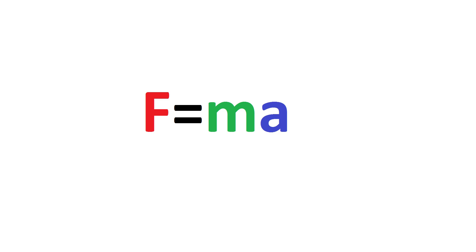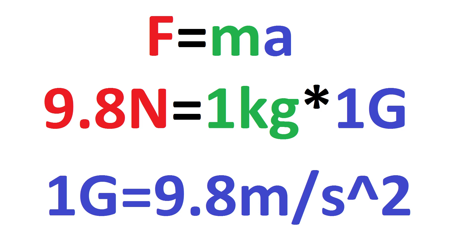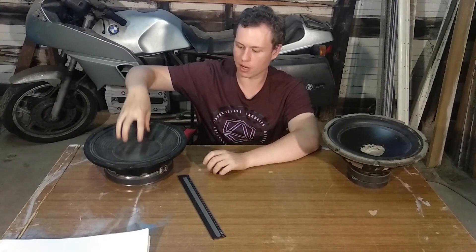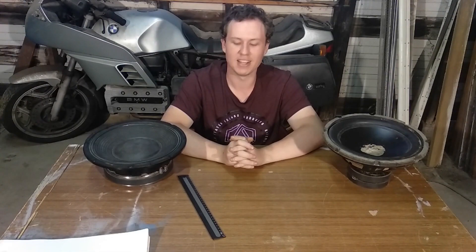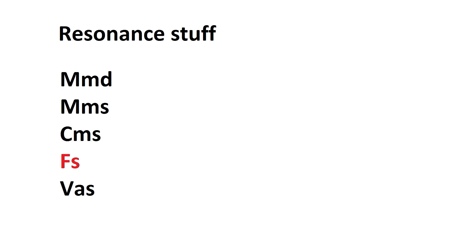Next is CMS — compliance, measured in millimeters per newton. The newton is a unit of force: one newton equals one kilogram accelerated at one meter per second squared, and at Earth's gravity of 9.8 m/s², roughly 102 grams exerts one newton. The CMS of a driver is how far the cone displaces when one newton of force is applied — so you put one newton on the cone and measure how far it dips.